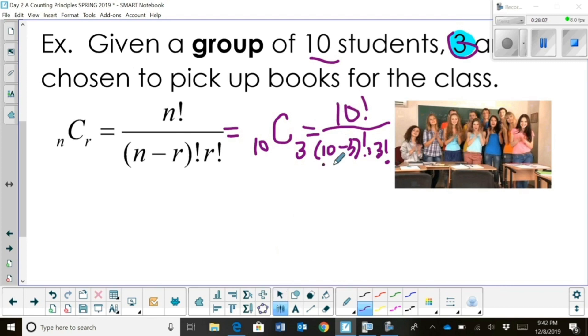So, I have ten factorial over seven factorial because ten minus three is seven. So, let's write it out as ten times nine times eight times seven factorial on top, all divided by seven factorial times three times two times one, so we can do some reducing.